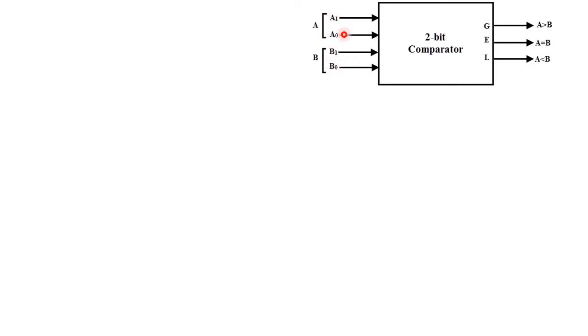So the number of combinations becomes 4, and based on that we have to check whether A is greater than B as the first output, A equals B as the second output, and A less than B as the third output.